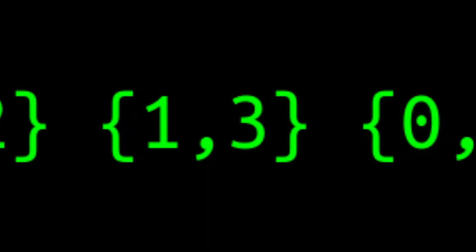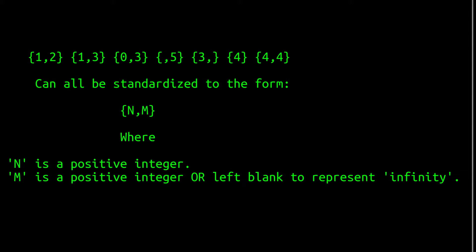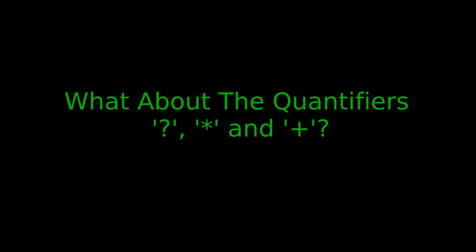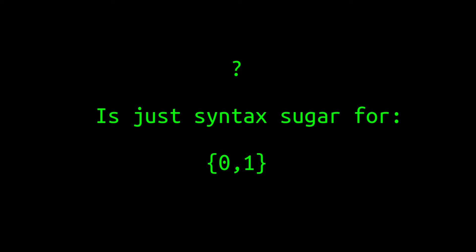Of the quantifiers we've reviewed so far, they can all be written in the standardized form {n,m}, where n is a positive integer and m is a positive integer or left blank to represent infinity. We still haven't discussed the meaning of the question mark, star, and plus quantifiers, so let's do that now. The question mark is just syntax sugar for {0,1}. The star is just syntax sugar for {0,}. And the plus character is just syntax sugar for {1,}.